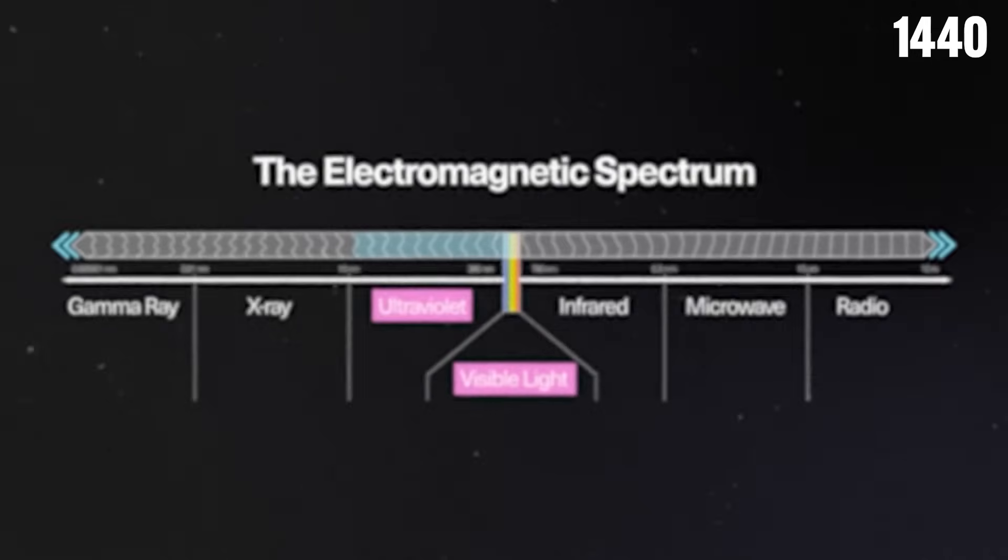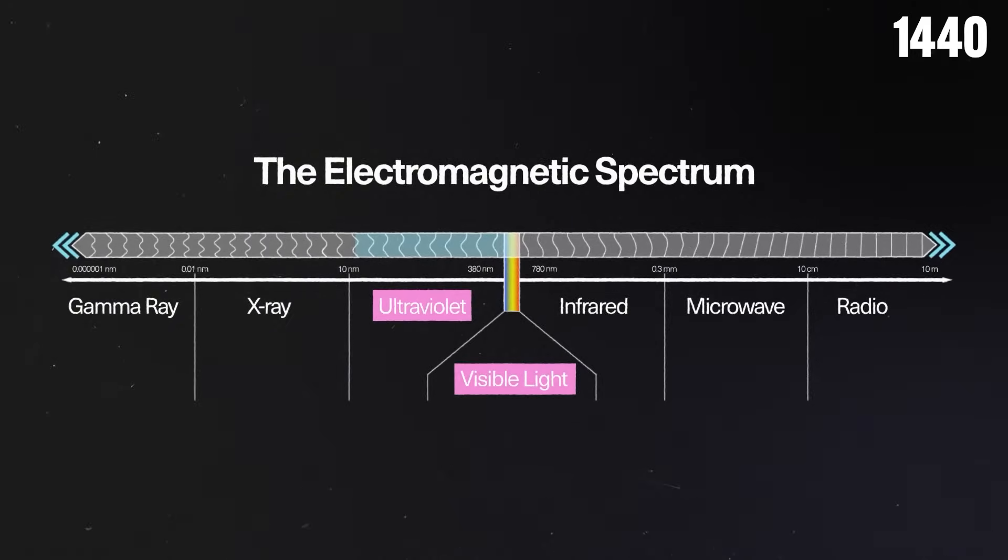While the Hubble collected data on visible and ultraviolet light, the Webb is equipped to detect mid to low infrared wavelengths, allowing it to see through cosmic dust that blocks visible light.